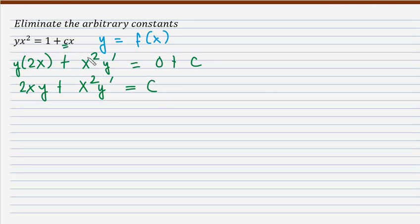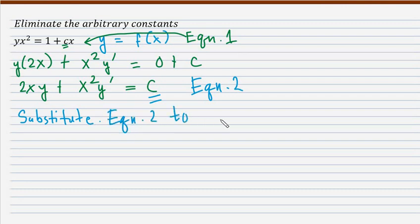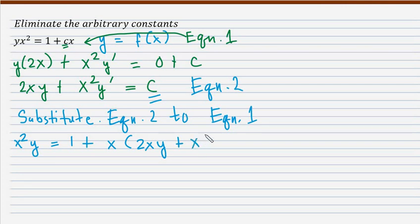Since we have only a single arbitrary constant, getting the first derivative is sufficient. Equation 1 is our given, and equation 2 is the result 2xy plus x squared y prime equals c. Since equation 2 is already equal to c, we substitute it into equation 1. Substituting yields x squared y is equal to 1 plus x times (2xy plus x squared y prime).